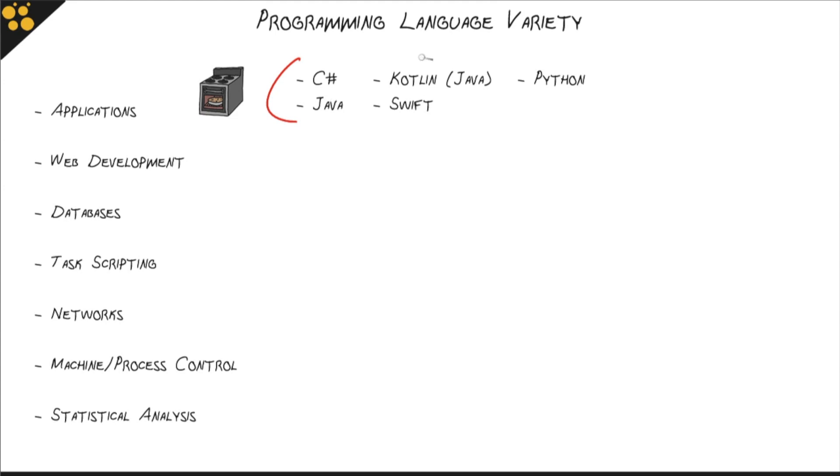Kotlin, which is a Java offshoot, is used for programming Android devices, your Android phone or tablets. Whereas Swift is used for Apple devices like iPads and iPhones.